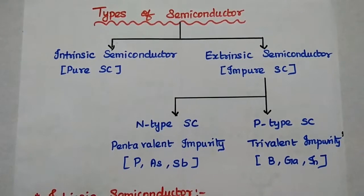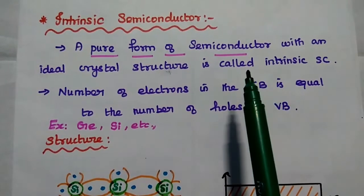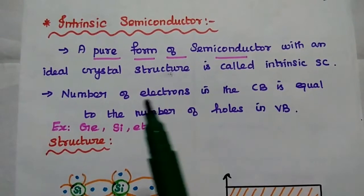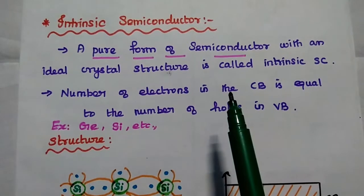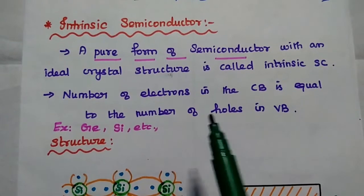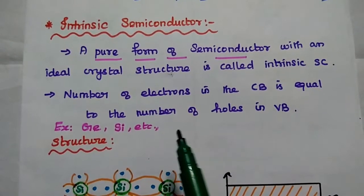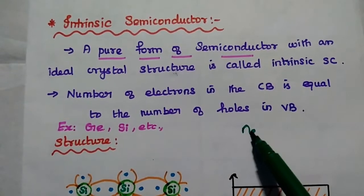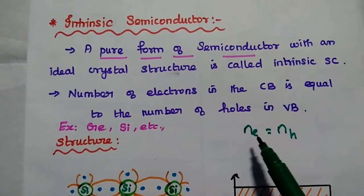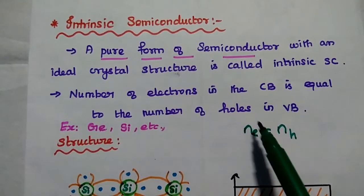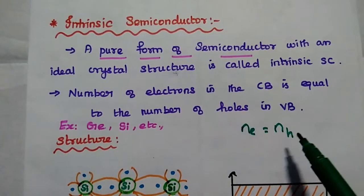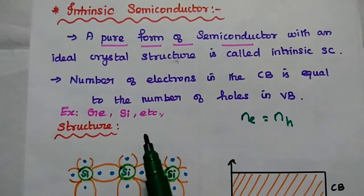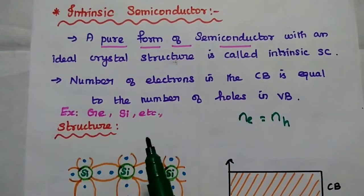Intrinsic semiconductor is a pure form of semiconductor with an ideal crystal structure. The number of electrons in the conduction band is equal to the number of holes in the valence band — we can say Ne equals Nh. Examples of intrinsic semiconductors are germanium and silicon.